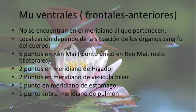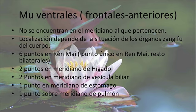Los puntos mu ventrales no se encuentran solamente sobre el meridiano al que pertenecen. El Shu posterior adquiere el nombre del órgano que representa: Shu posterior de pulmón, Shu de corazón, Shu de pericardio. El punto mu ventral o mu anterior, en cambio, muchas veces no se encuentra sobre el meridiano que representa. Por ejemplo, el punto Hígado 13 es punto mu ventral de Vaso, pero está en el meridiano de hígado. Seis puntos se encuentran sobre el meridiano Ren Mai; el resto sobre meridianos que van en la región anterior del tórax y del abdomen.